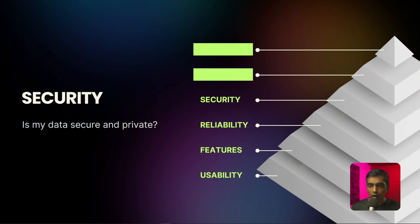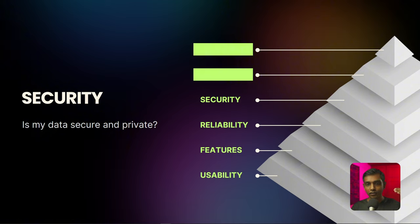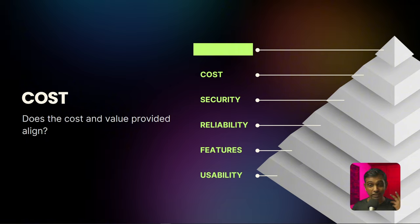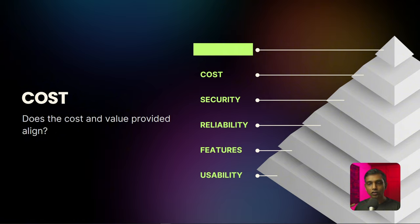As I looked at how humans evaluated and complained about software, I realized the next significant level in the pyramid was cost. The question they asked is: does the cost and the value provided align? This layer corresponds to Maslow's esteem needs — users need to feel they are making a wise investment that offers real value. In software pricing, price is the amount a buyer pays, while value is what the buyer perceives as the benefit they'll receive.